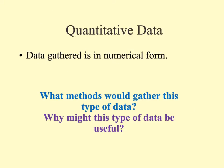Quantitative data is something some of you might have come across in business studies or even psychology. Quantitative basically means data gathered in numerical form. Can you consider what type of research methods would gather numerical data, and why might this type of data be really useful? Time and cost can sometimes be a huge consideration for sociological studies, and quantitative data is generally very quick to collect and also very easy and quick to analyse.